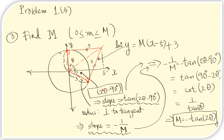The angle of the radius can be obtained by subtracting 90 degrees from 2 theta, giving us 2 theta minus 90 degrees for this angle. Therefore, the slope of this radius equals the negative of the tangent of (2 theta minus 90 degrees). We can now equate these two expressions for the slope of the radius, and this is what we obtain.